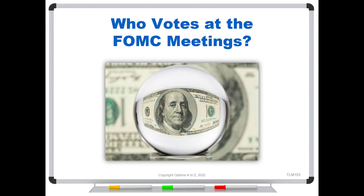Is it just the Fed chair? Or if it's the FOMC, what does that entail? Or is it the Board of Governors? We hear all of these different terms, and it can get kind of confusing about who's actually voting on these policies. So this is a little different video from what I normally do, which is usually primarily on options and strategies, but I think it helps to understand the inner workings of the Federal Reserve and who's actually casting these votes.